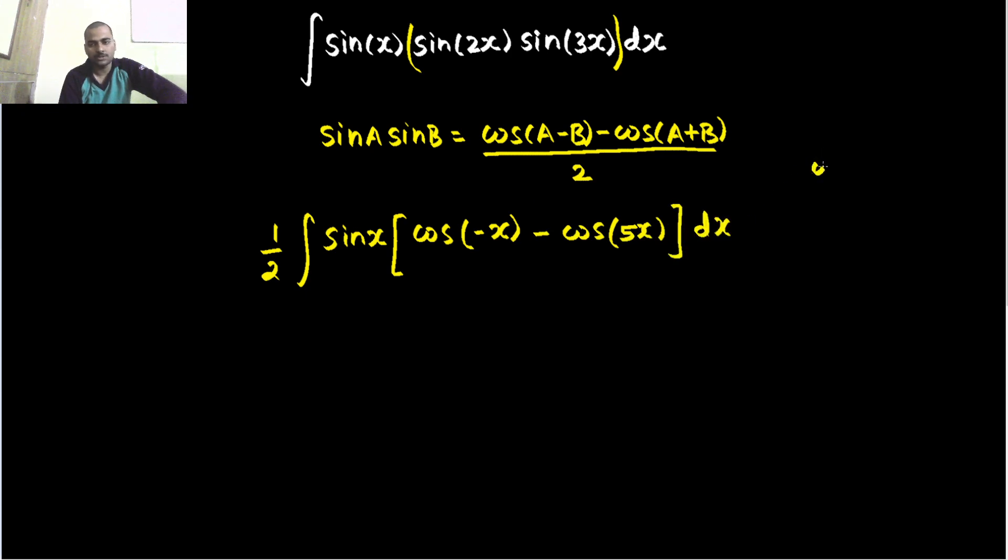minus cos of their sum, that is 2x plus 3x, that is 5x. You know cos of minus theta gives you cos theta. So this is 1 by 2 integral of sin x.